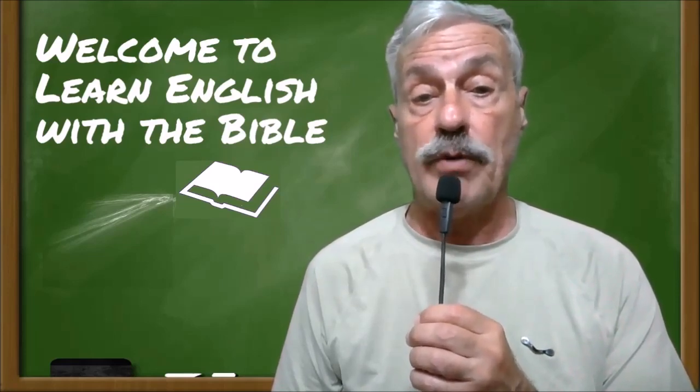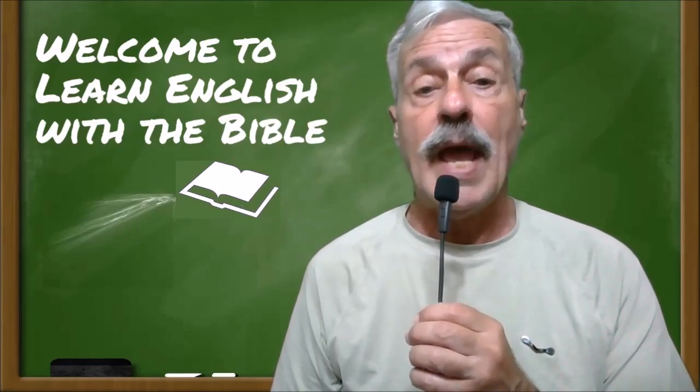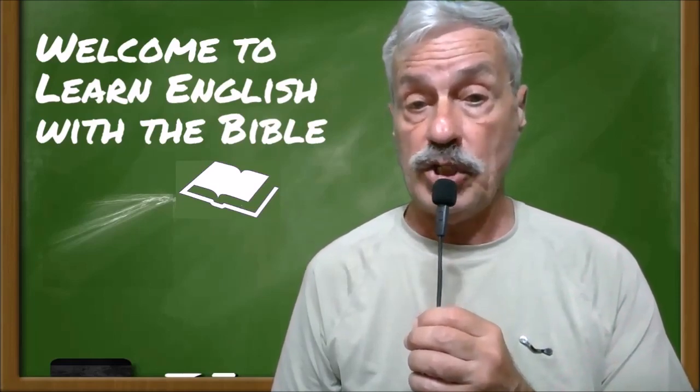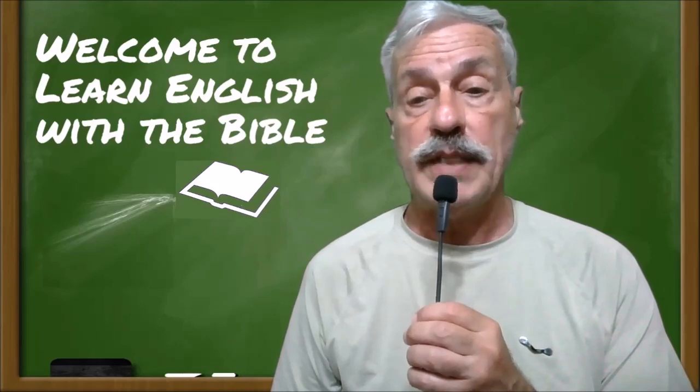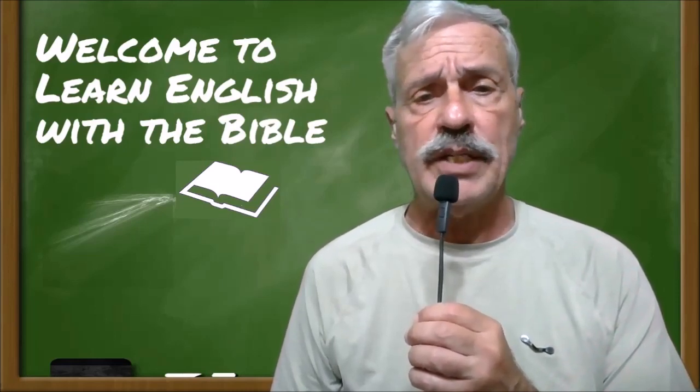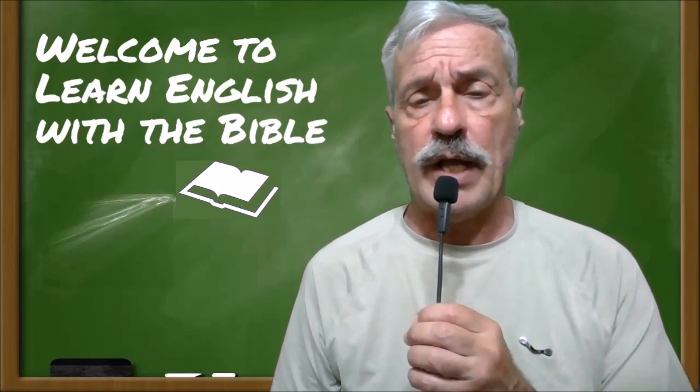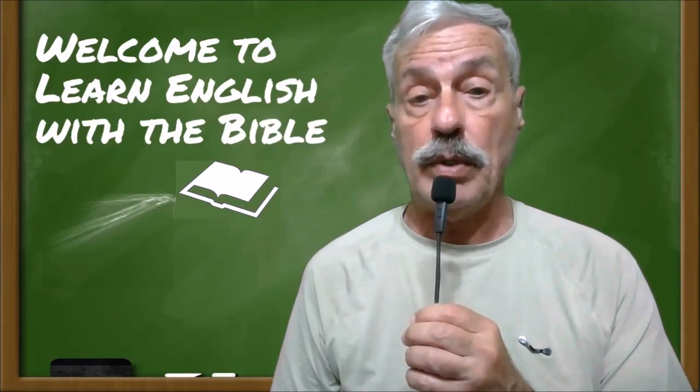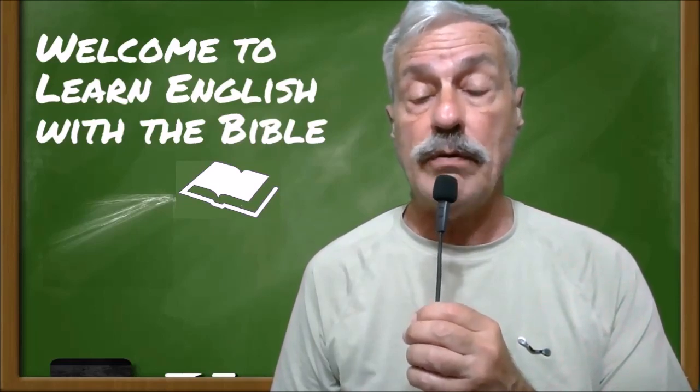also be set free from enslavement to corruption and have the glorious freedom of the children of God. Romans 8, verse 21. Just as Jehovah arranged for the Israelites to balance work and rest, so it will be for his people in the coming thousand-year reign of Christ.